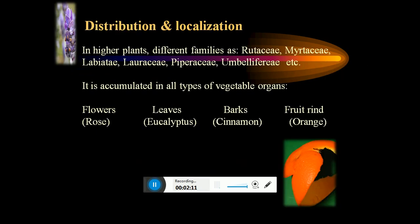Coming to the chemical definition of volatile oils: volatile oils are those oils which are made up of terpenoids, and terpenoids are made up of many units of isoprene — that is, five carbon units in the chain.